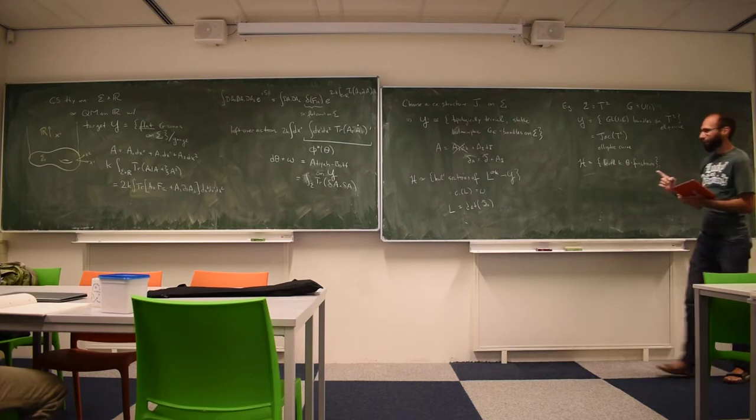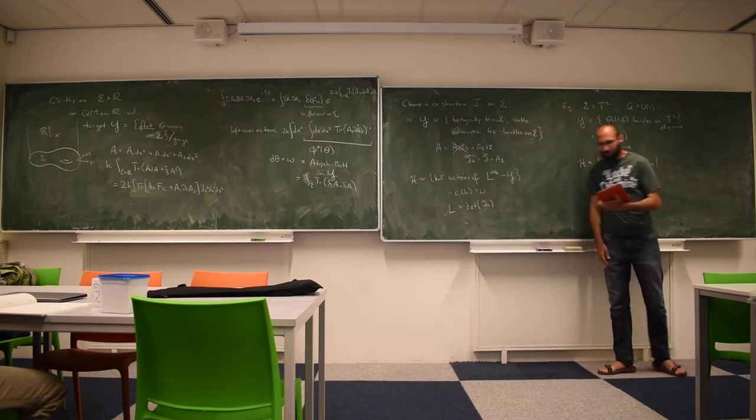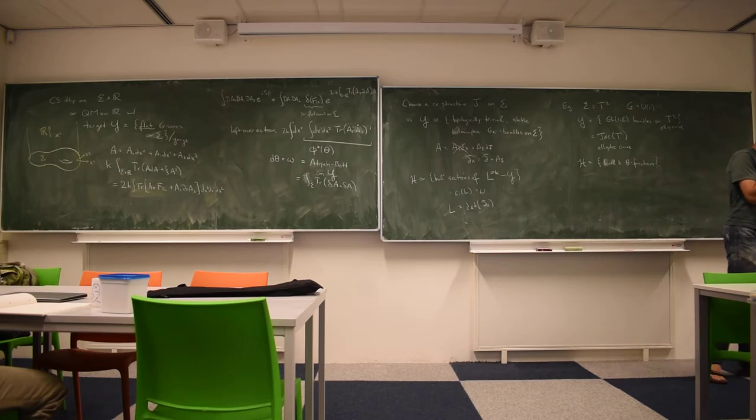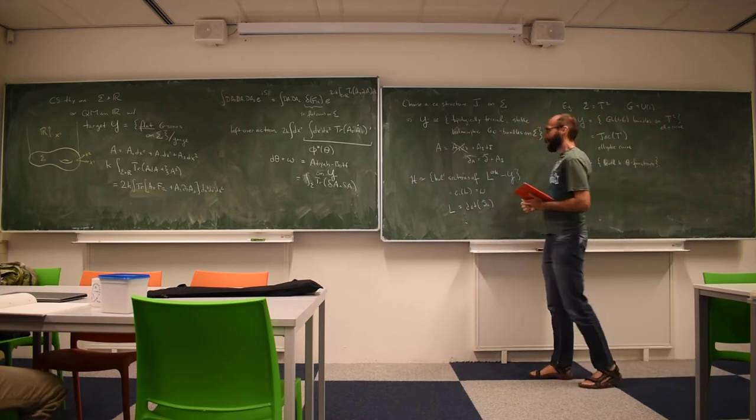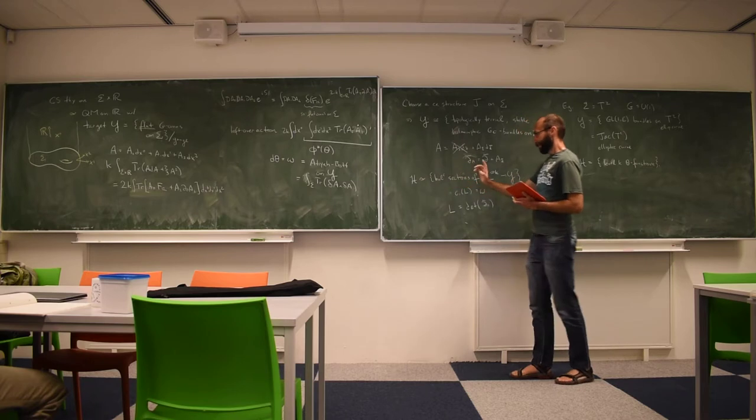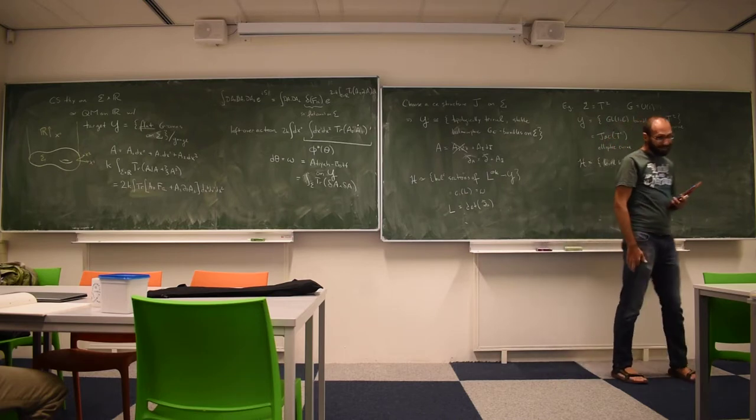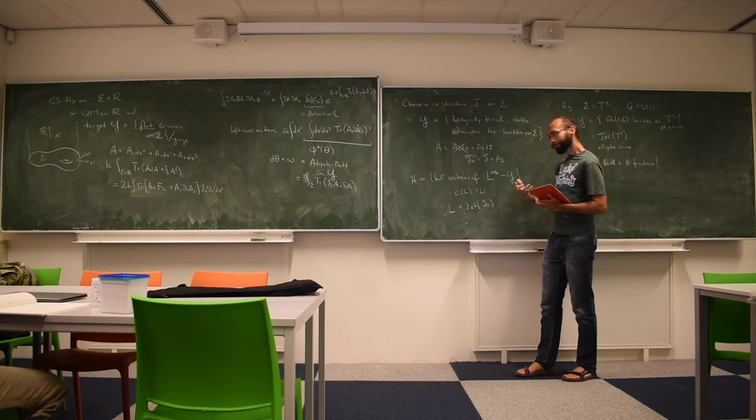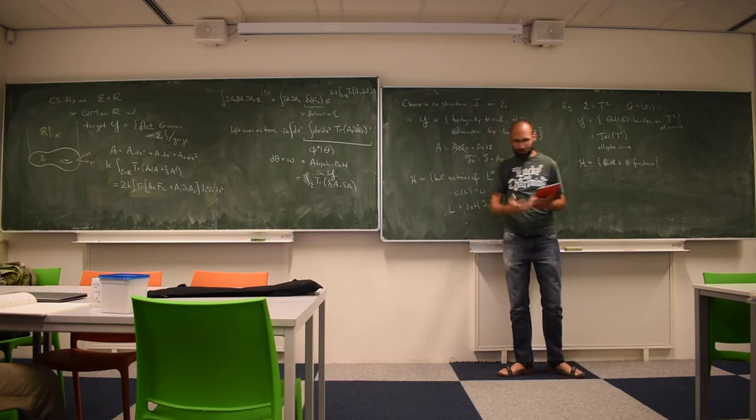So this identification of the Chern-Simons Hilbert space with sections of the determinant line was the starting point for many developments. It allowed Witten to connect Chern-Simons theory with conformal field theory and get a modular functor out of Chern-Simons. This definition of the Hilbert space depends on a choice of complex structure on the underlying surface in a locally trivial way. As one applies mapping class transformations to the surface, one gets an action of the mapping class group on the Hilbert space, leading to a modular functor story.